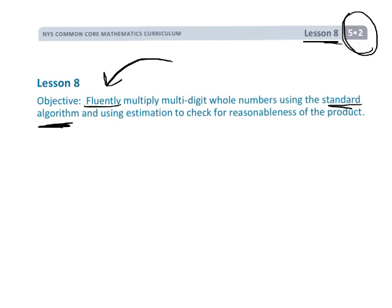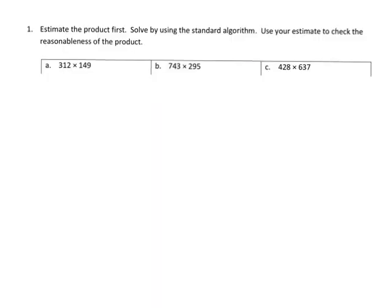However, we are using estimation to make sure that we are still being reasonable with our answers. So first, we're going to estimate the product, then we're going to use the standard algorithm. There are a lot of ways that we can estimate, so there's no one way to do it.